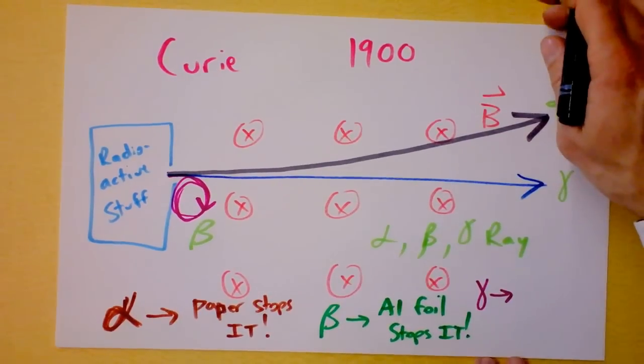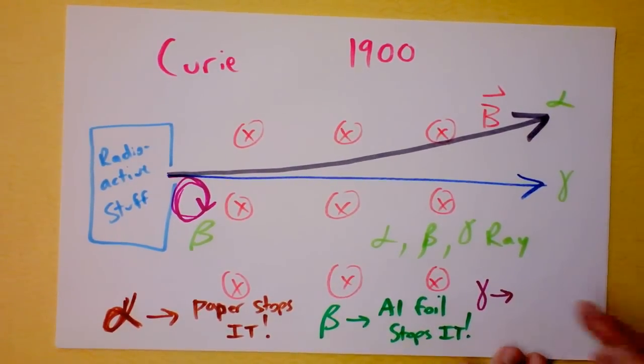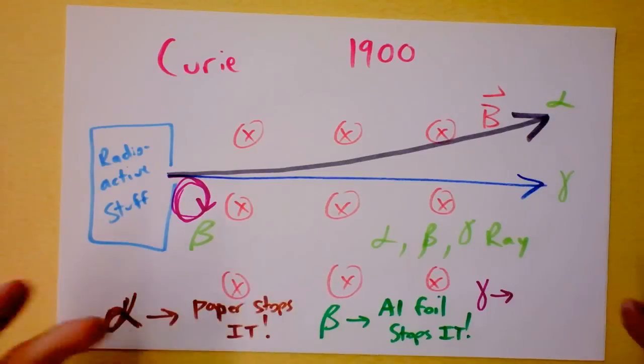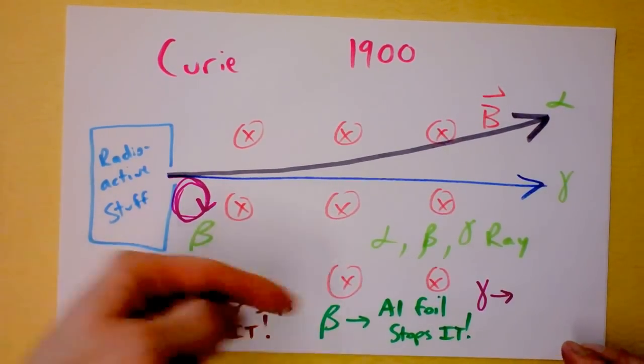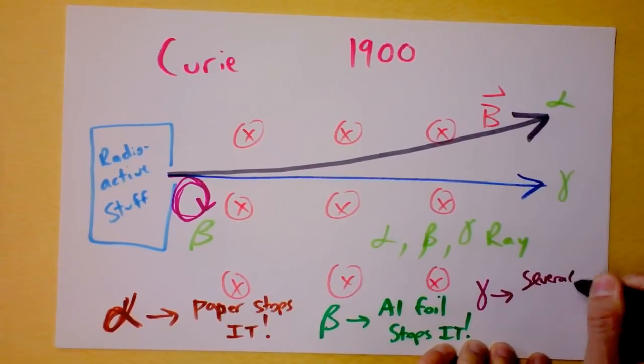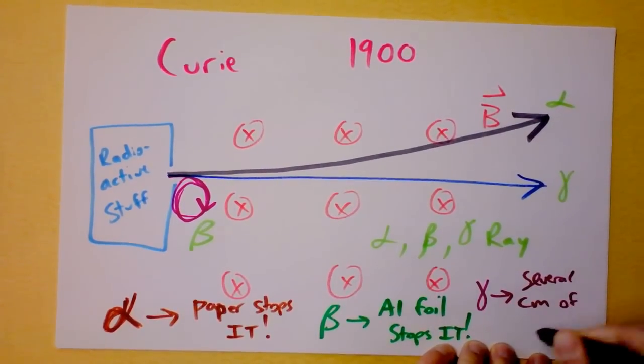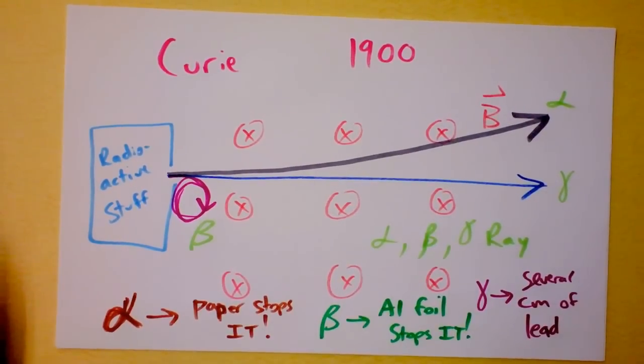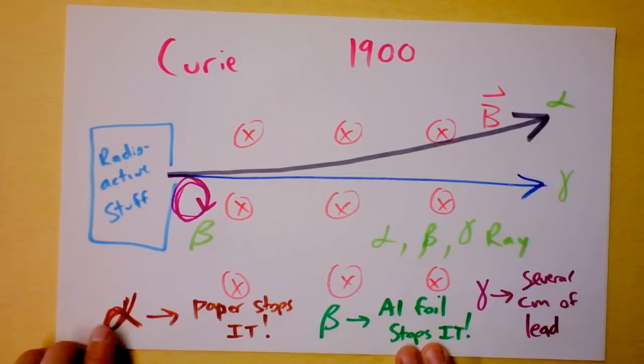And then what about this guy called the gamma ray? Gamma rays are a major problem. Gamma rays can go through several centimeters of solid lead. That's an enormous amount of mass, and this ray just shoots right through it. Let's see, several centimeters of lead. I'm going to have to talk over that guy, so I think I can do it. Alright, several centimeters of lead, aluminum foil stops beta rays.